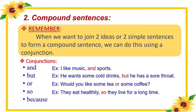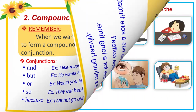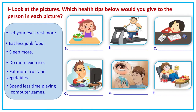And 'because' for a reason — for example: I cannot go out because it's raining heavily. Now let's do Exercise 1: look at the pictures and choose which health tip you would give to the person in each picture. There are six health tips in the box and six pictures. Look at the pictures carefully and give suitable advice for each person. Let's do it together. Picture A: she doesn't like eating fruits and vegetables — the answer is: eat more fruits and vegetables. Picture B: he is overweight — the correct answer is: do more exercise. Picture C: she looks tired — the answer is: sleep more.